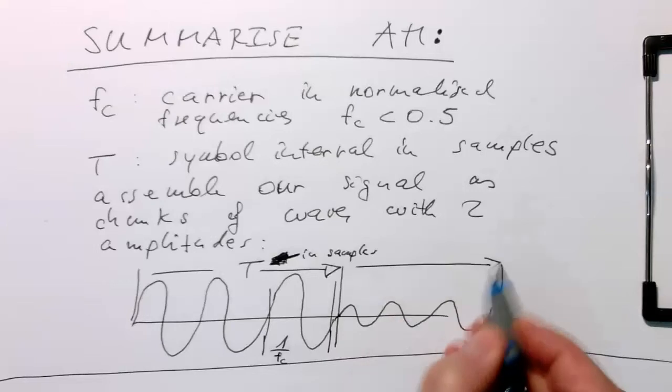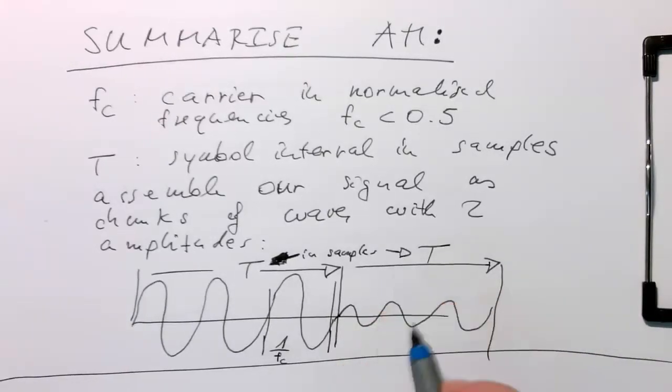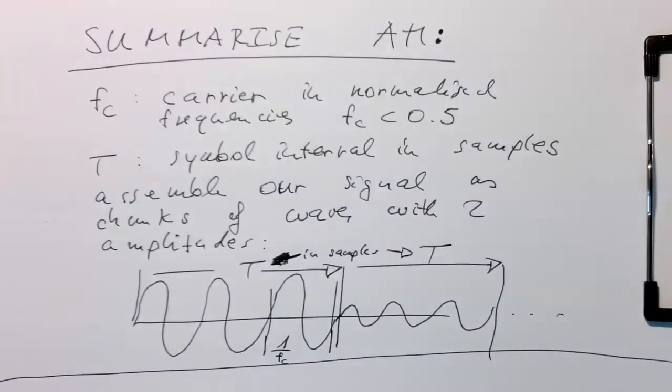Then this lasts again for T, again in samples, and so on. And so that's the way we are generating AM in our sample system.